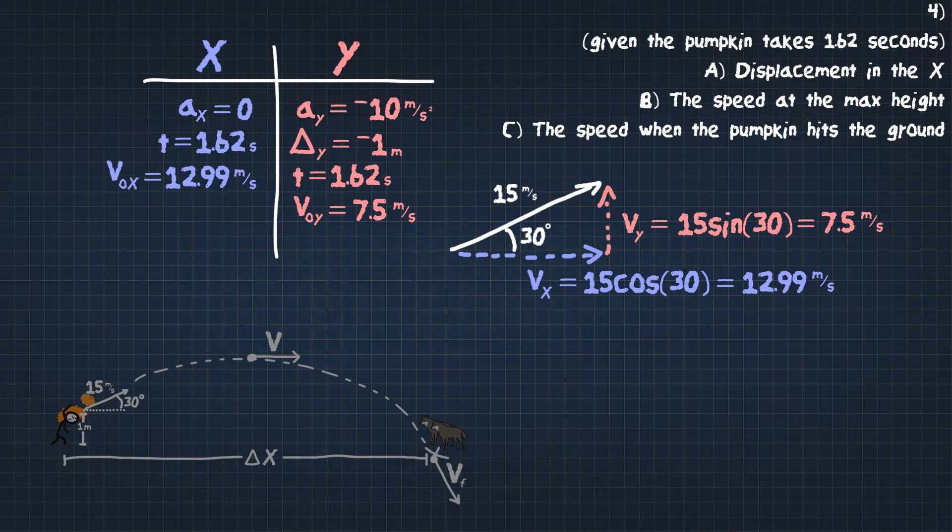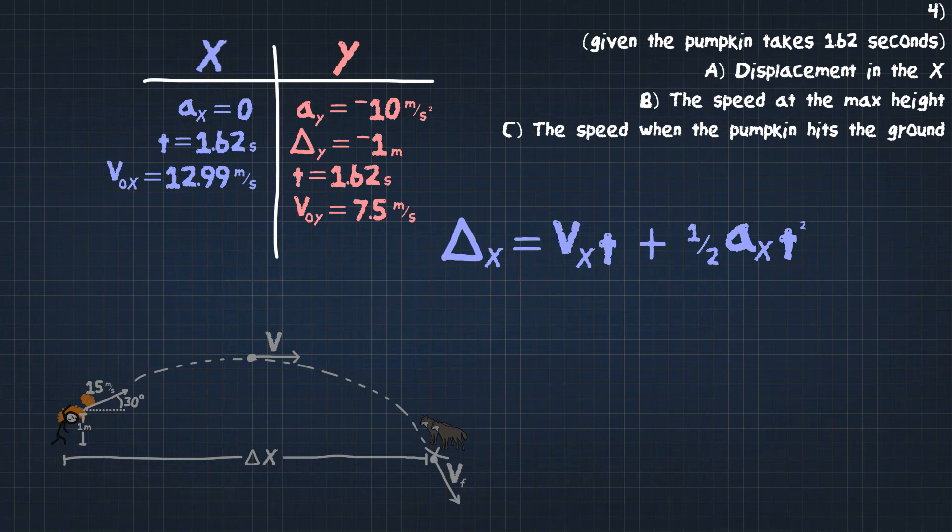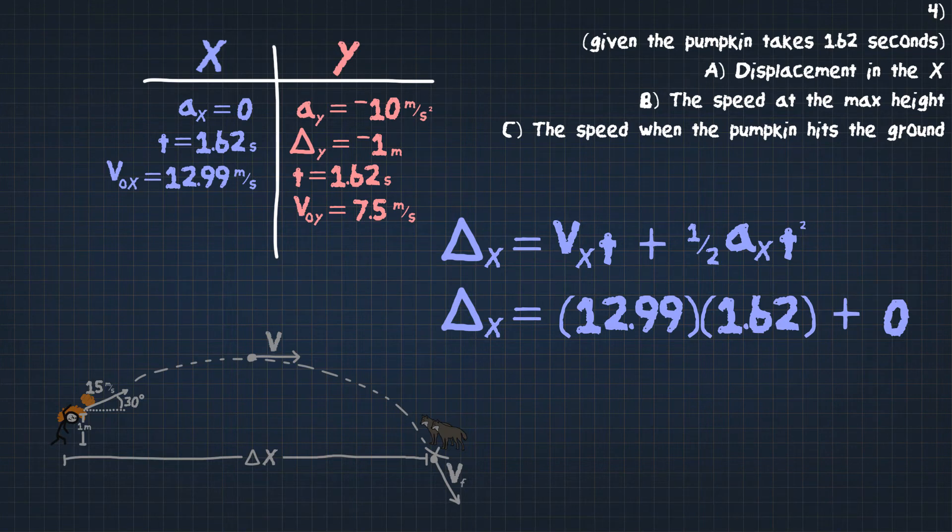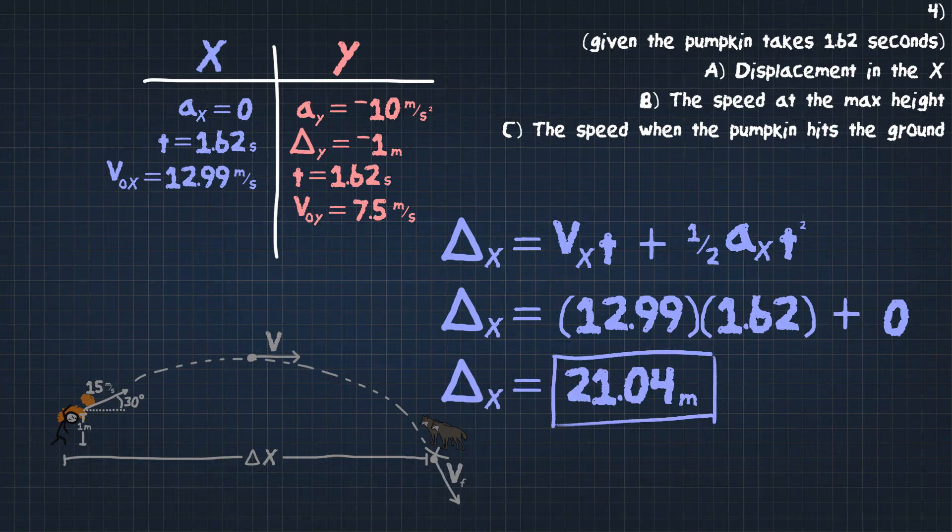Now we have three pieces of information in the x, and we're looking for the displacement. Look at our formula sheet, and we see that this formula here has all four of the variables that we need. Displacement in the x equals vx t plus 1/2 ax t squared. Displacement in the x is what we're looking for. vx equals 12.99, time is 1.62, and all of this turns to zero because acceleration is zero. Put this into our calculators, and we get displacement is 21.04 meters.